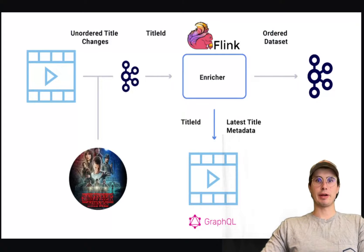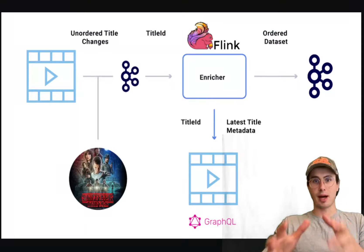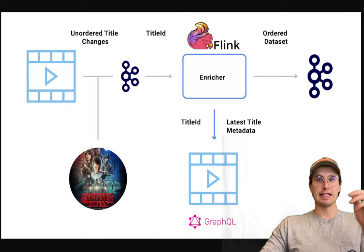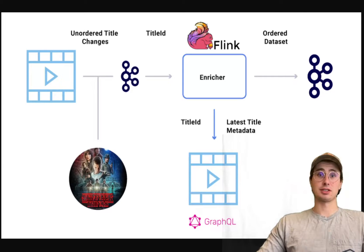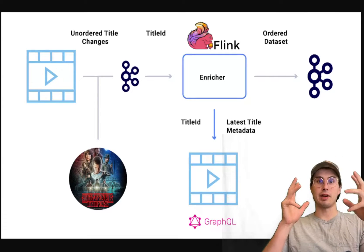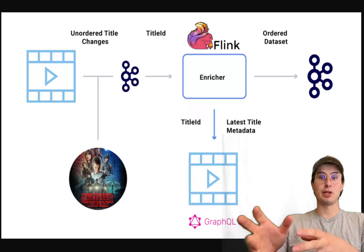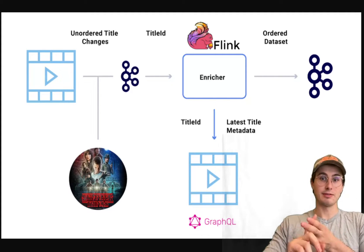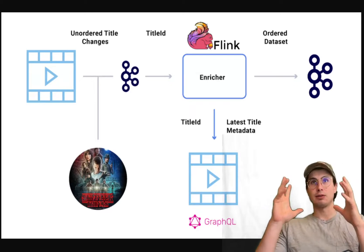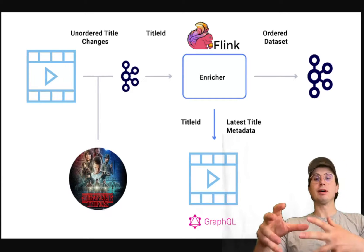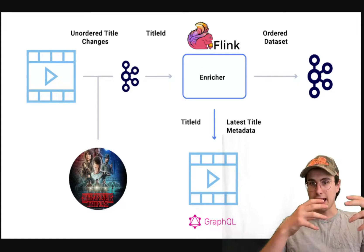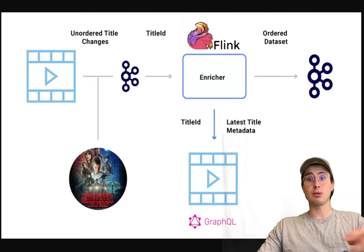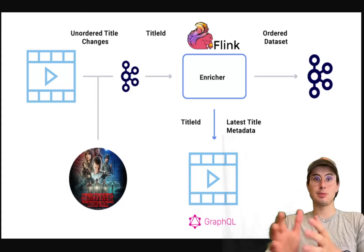The first principle is to choose common components wisely. A great example of this is how Netflix applies this principle using Apache Kafka — a popular open-source streaming software for real-time event monitoring and processing — layering it throughout the business. Kafka's widespread adoption and community support make it a wise choice because it integrates with almost anything within the Netflix tech stack, which reduces both integration issues and costs.